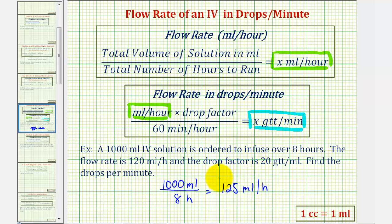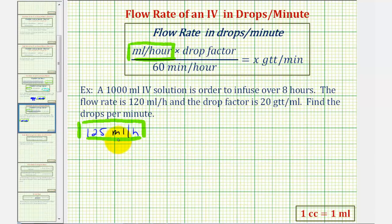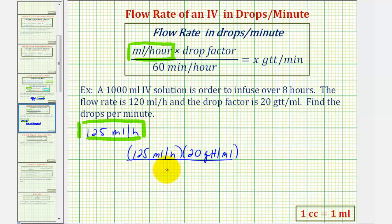Now we can use this flow rate to determine the drops per minute. Let's go ahead and do this on the next slide. The drops per minute will be equal to 125 milliliters per hour times the drop factor, which is 20 drops per mL. We're going to divide this by 60 minutes per hour.